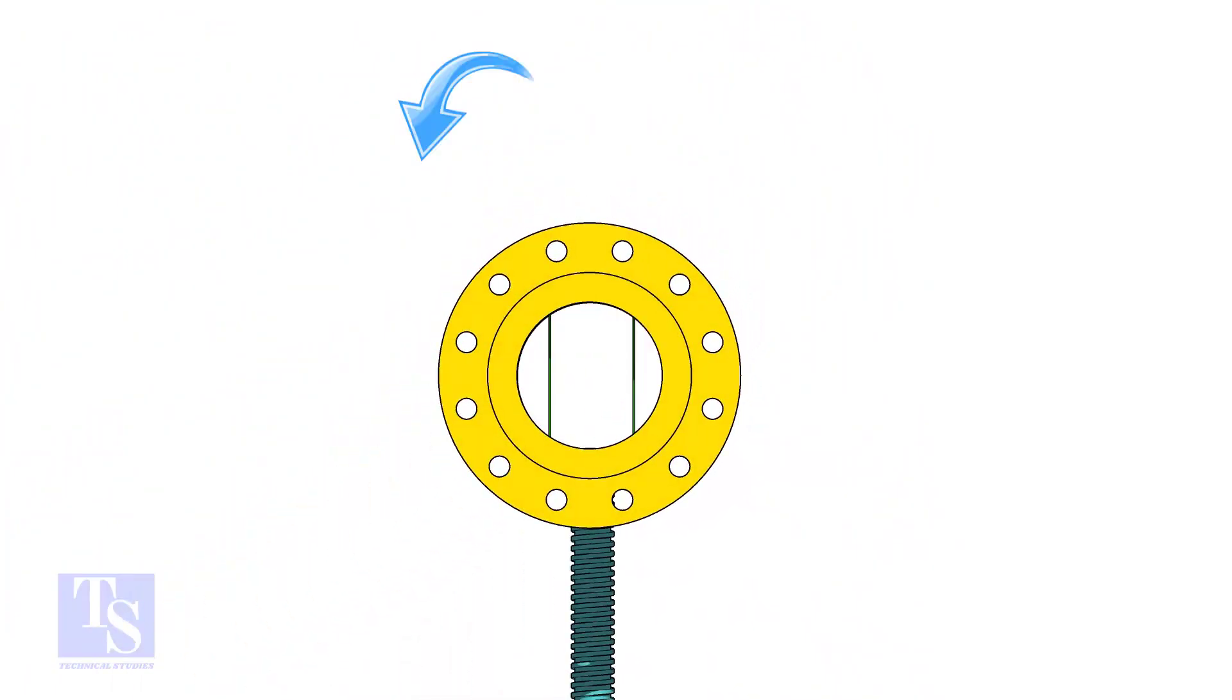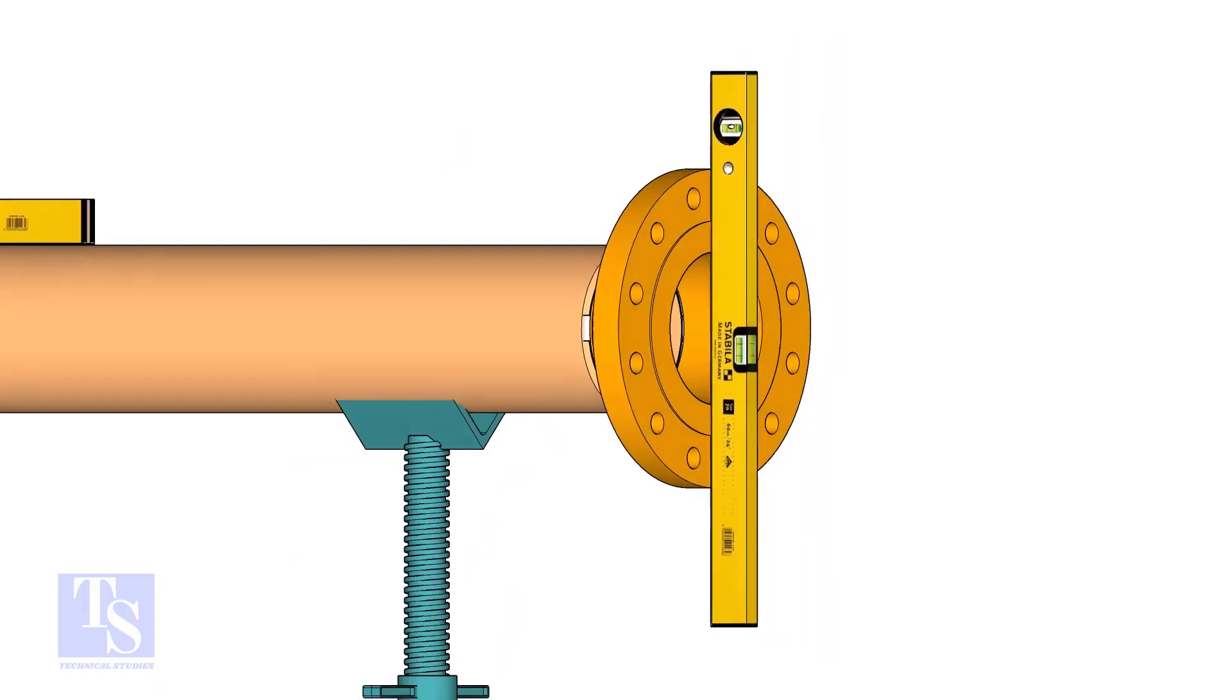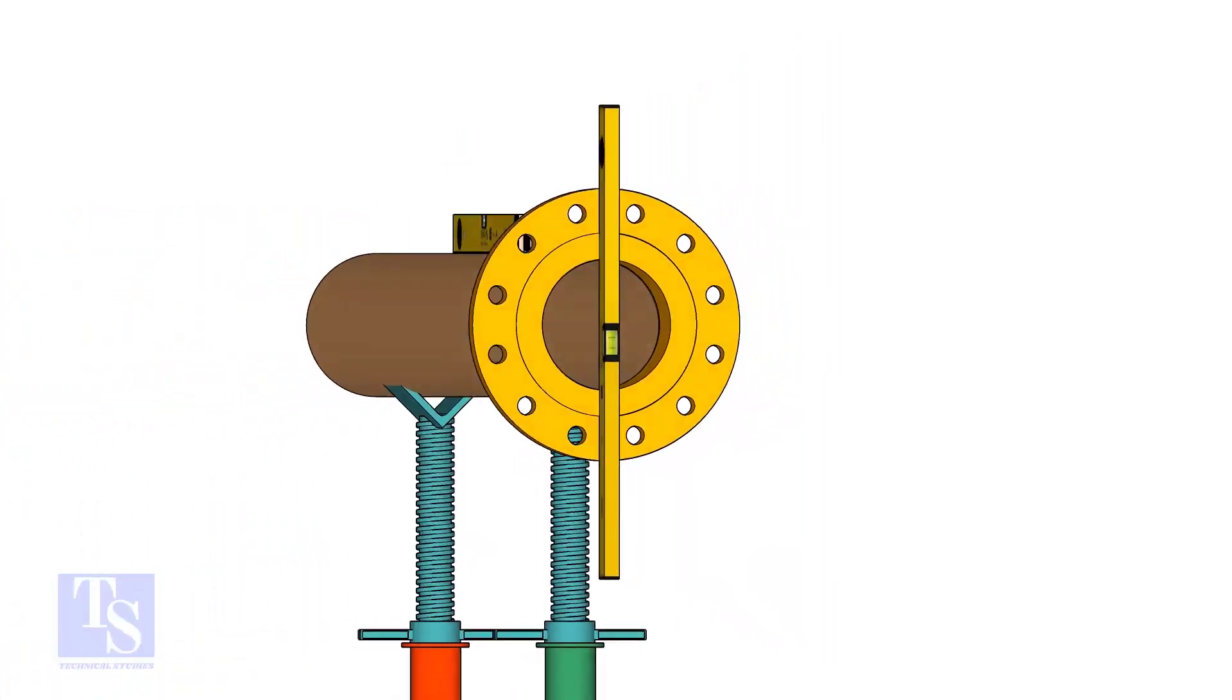Rotate the pipe and flange 90 degrees to either side. Check the vertical level of the flange. If correct, tac weld on the top side of the joint.